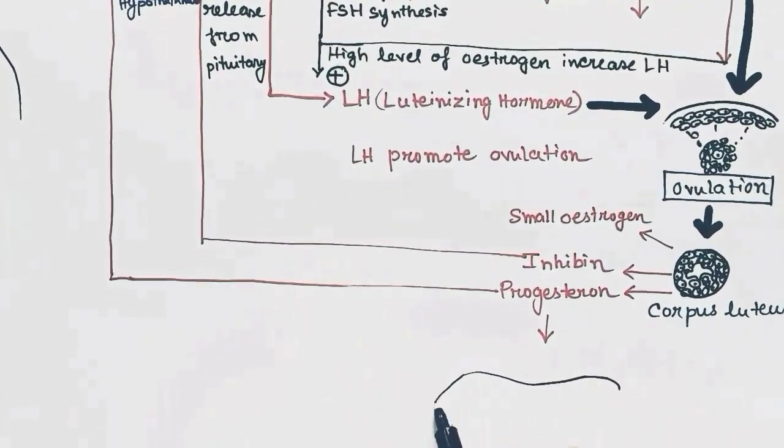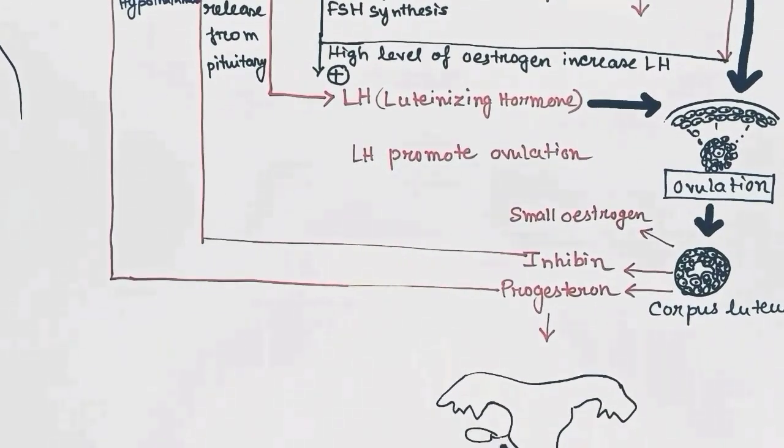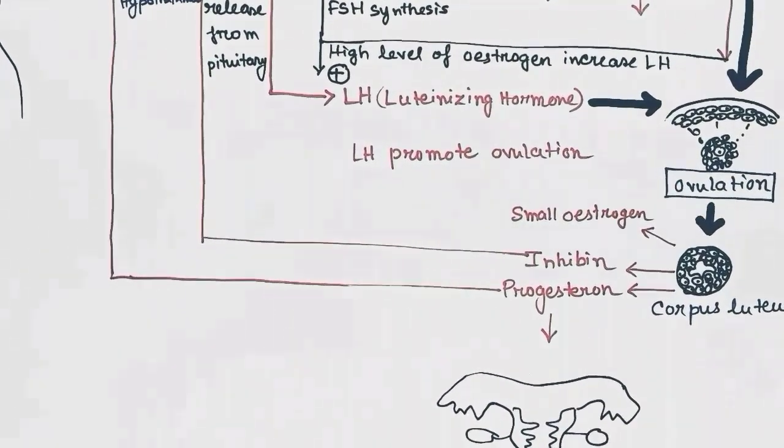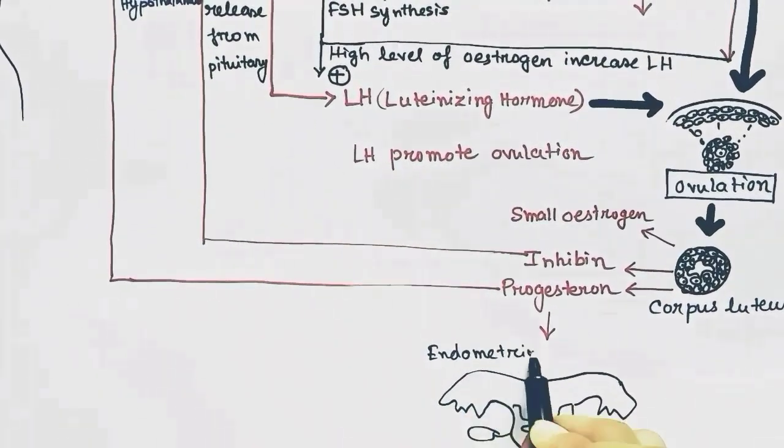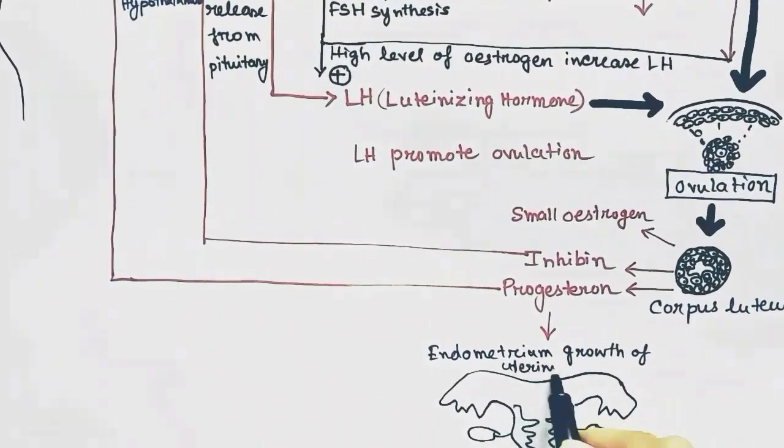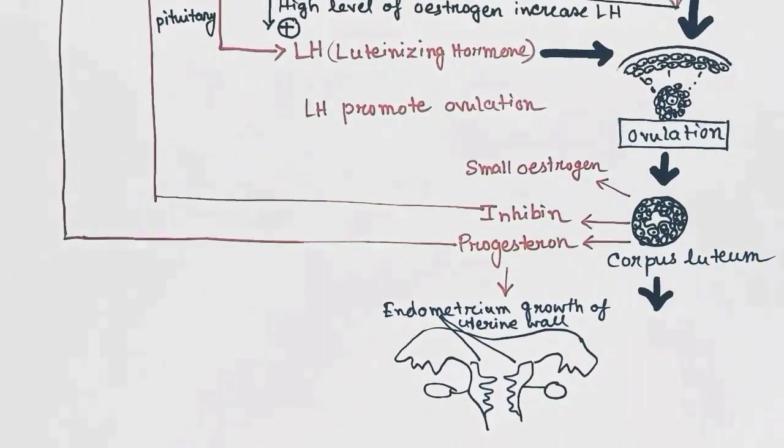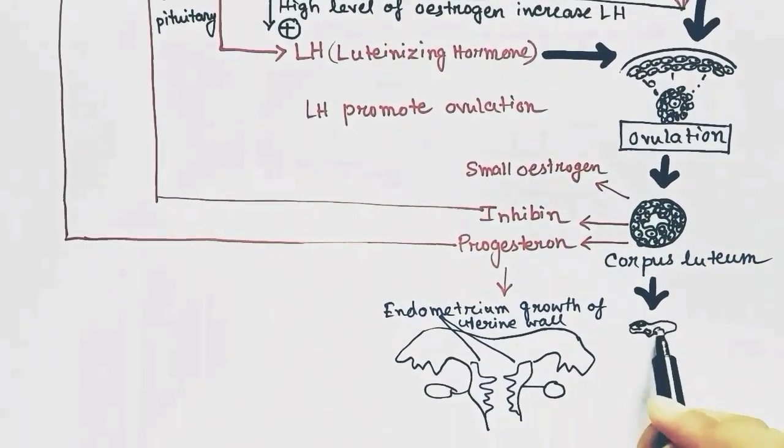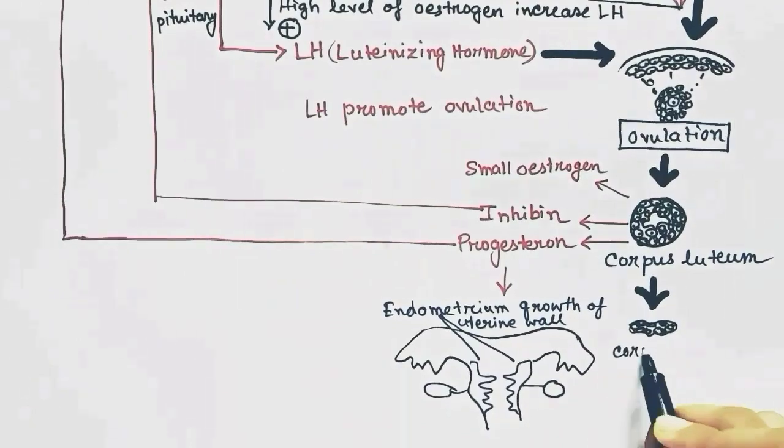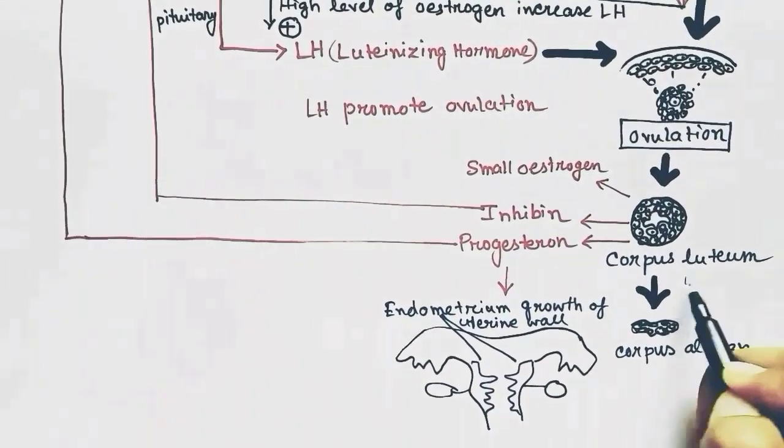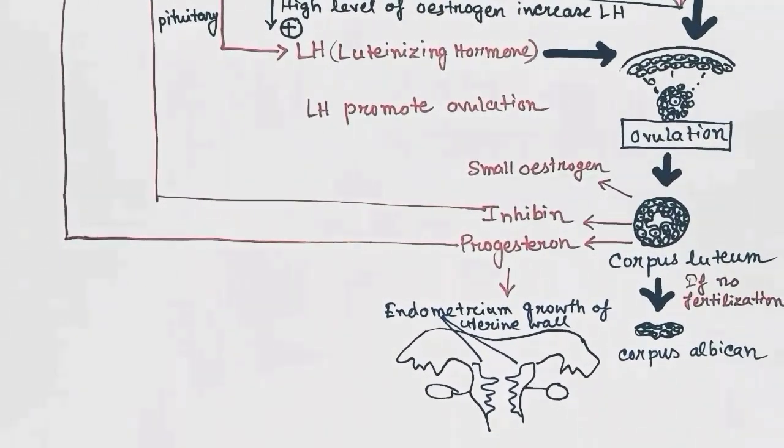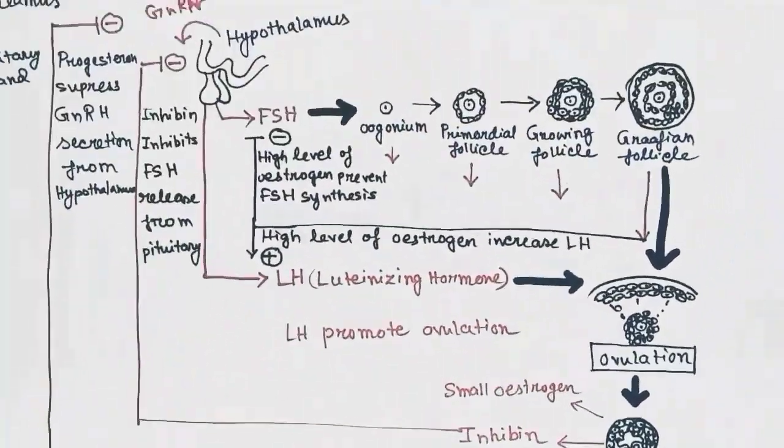Progesterone have its role in formation of endometrium growth of uterine wall as well. Corpus luteum degrades and forms corpus albicans and progesterone and inhibin drops.